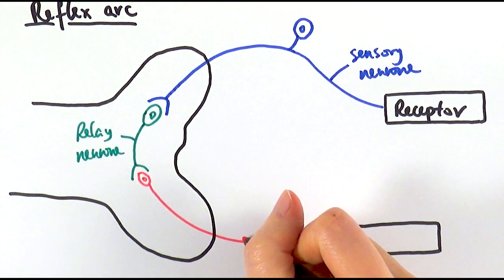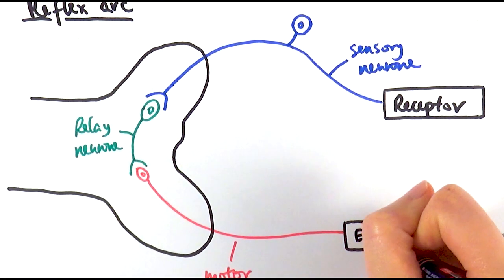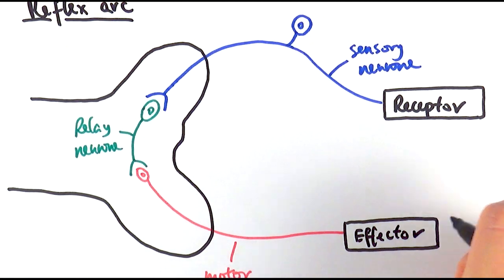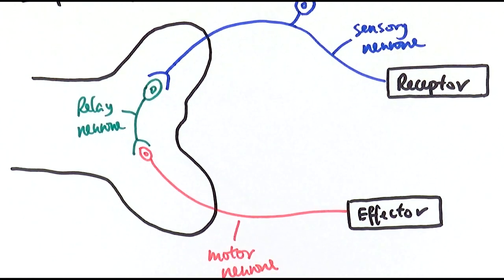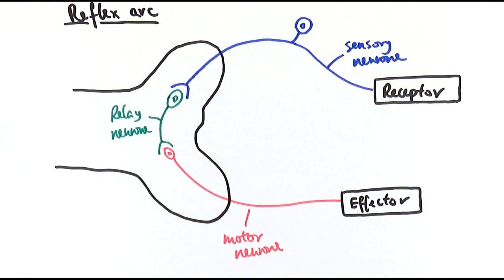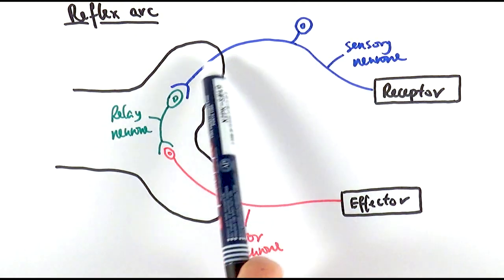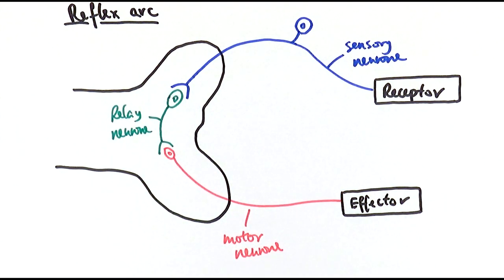Then finally we've got the motor neuron, which sends the impulse to the effector to produce the reaction. The effectors tend to be either a muscle or glands, depending on which it is. We're going to be looking at two examples of reflex actions where the effectors are muscles. To help with explanations for those two examples, I've color-coded them: the blue one is the sensory neuron, the green one is the relay neuron, and the red one is the motor neuron.